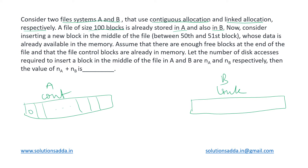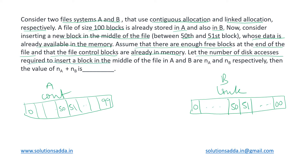The file has blocks from 0 to 99, with block 50 and 51 in the middle. We need to insert a new block between the 50th and 51st block in both file systems. The data is already in memory, there are enough free blocks at the end, and the file control blocks are already in memory. We must determine the number of disk accesses required — Na for file A and Nb for file B.